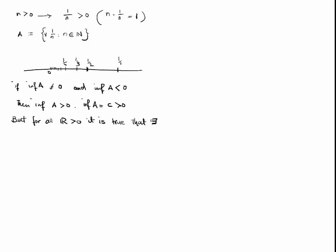Being that C is also a real number, there has to be a 1 over n, which is less than C by the Archimedean principle.